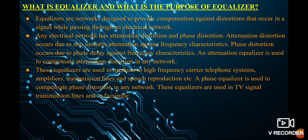A phase equalizer is used to compensate phase distortion in any network. These equalizers are also used in TV signal transmission lines, facsimile, and any electrical network where there is attenuation distortion and phase distortion due to non-uniform attenuation against frequency characteristics. Phase distortion occurs mainly due to phase delay against frequency characteristics. An attenuation equalizer is used to compensate attenuation distortion in any network.